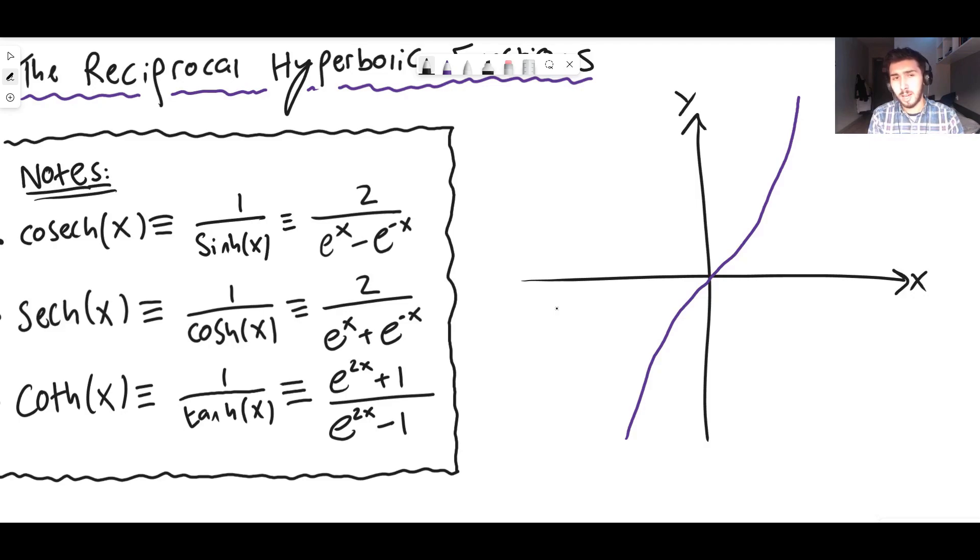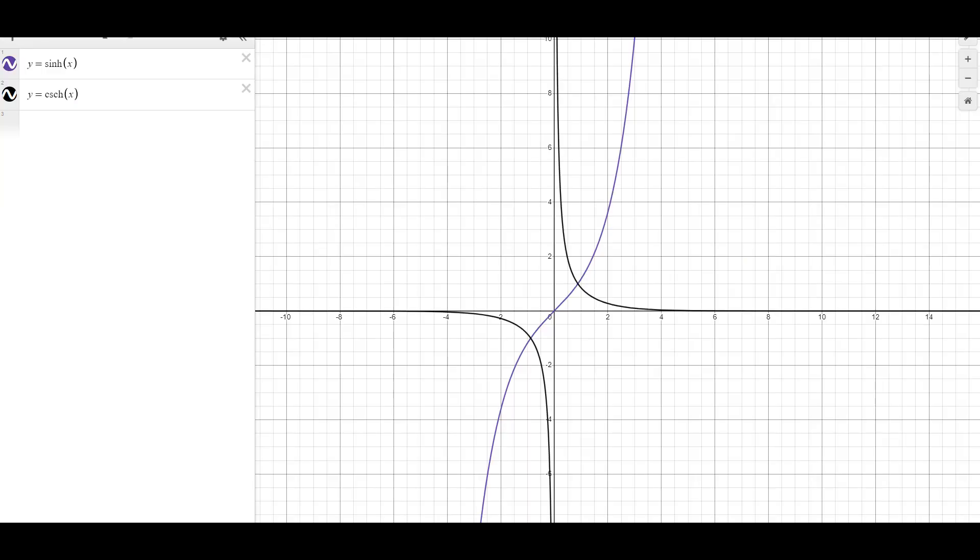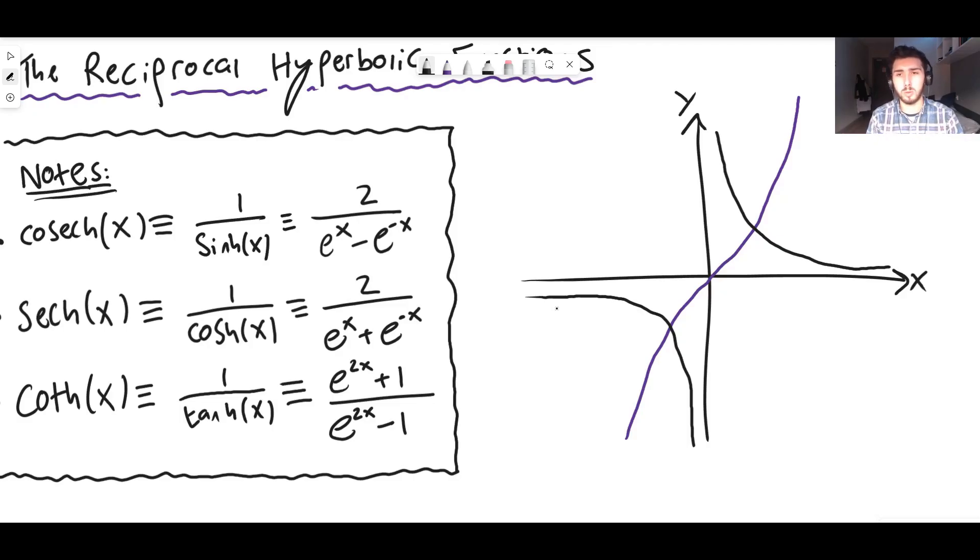Well maybe we'd expect it to be something that looks a little bit like one over x cubed and actually you'd be exactly correct. So really, and again you'll see it now that the graph of cosech is just looking very similar to the graph of one over x cubed.